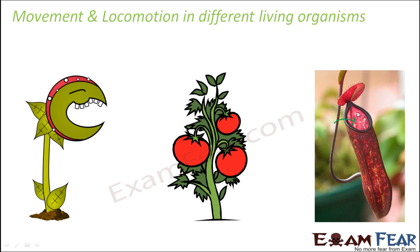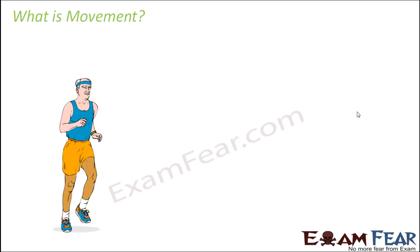Different plants show different types of movement and locomotion. When I say locomotion, I mean the entire organism moving from one place to another, which is not much seen in plants because plants are generally immobile — they remain static at one place and show some sort of movements from there. Now let us understand what movement and locomotion formally mean. Movement, in simple words, is the act of moving — whenever something is moving, it is said to be movement.